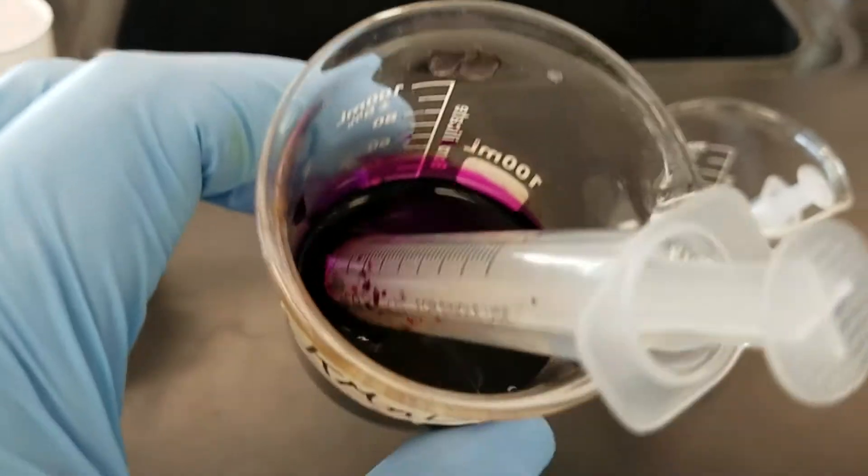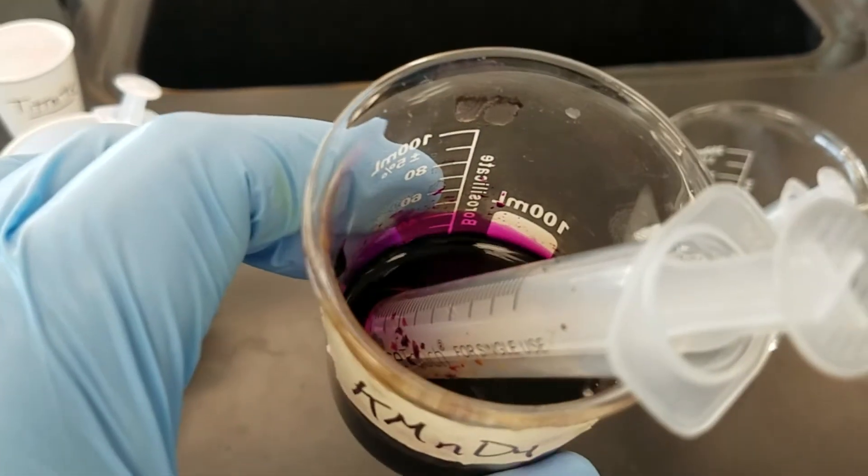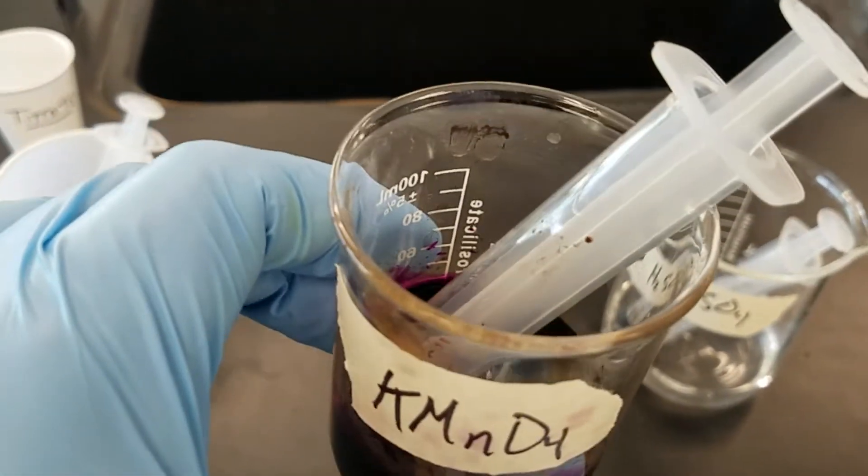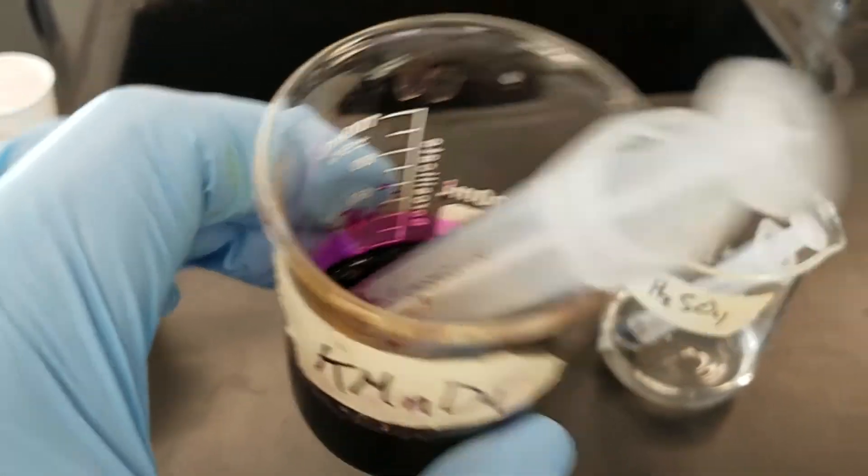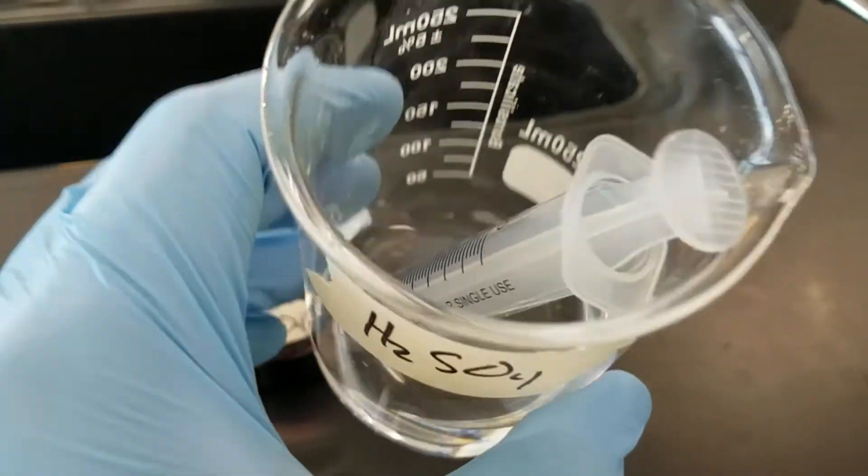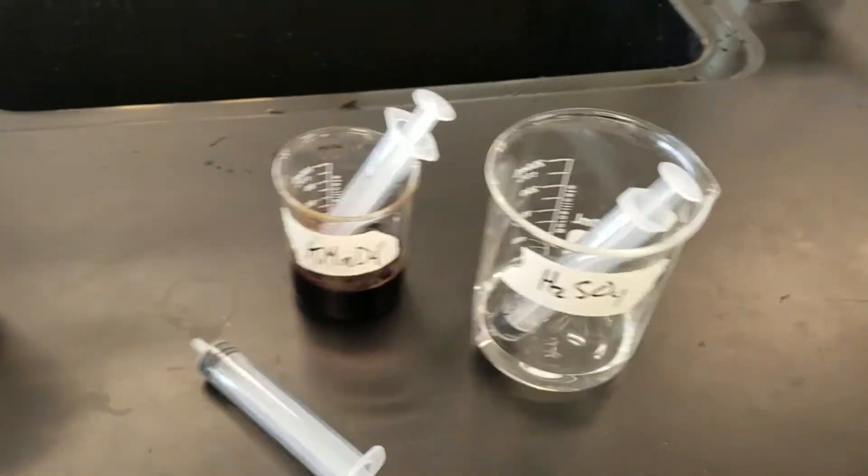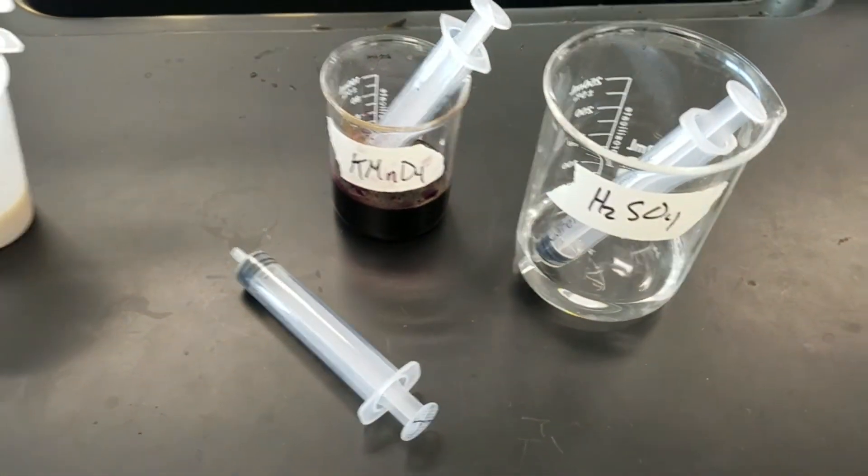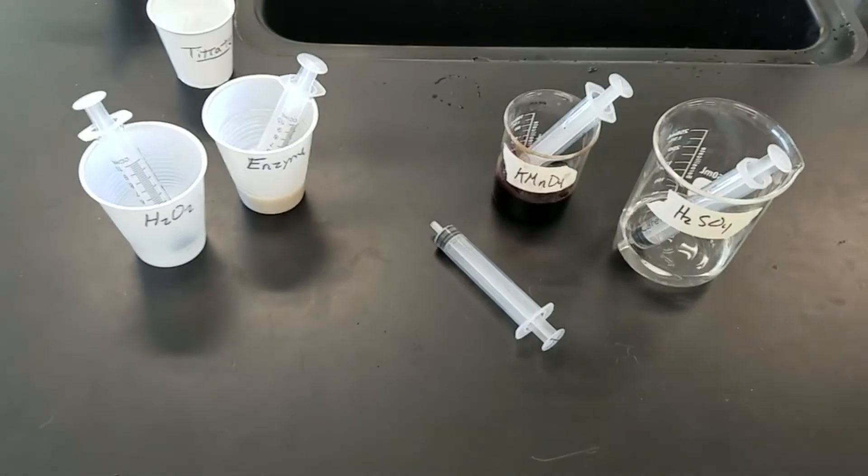Potassium permanganate is very purple and unless you want to look like Barney, I suggest rinsing your fingers off and not wiping your hands on your shirt. Acid will potentially eat through your clothes and as we said at the beginning of the year, if you touch your eye, you're going to have a bad time. Again, please follow all lab safety procedures.